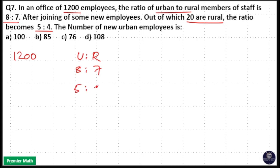Here 8 plus 7 units equals 1200. That means 1 unit equals 1200 divided by 15, which equals 80.